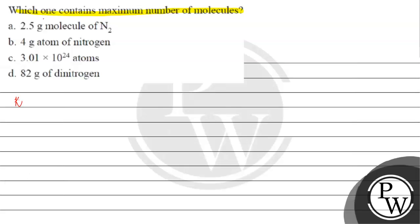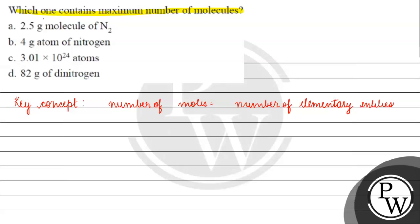The key concept for this question is: the number of moles is basically equal to the number of elementary entities — which can be ions, molecules, or atoms — divided by Avogadro's number, which is 6.02 into 10 raised to the power 23 mole inverse.